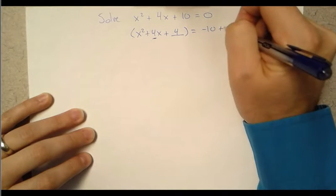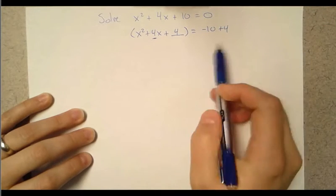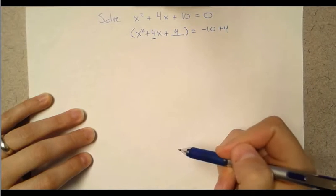Now make sure you add it to both sides. Basic principle in algebra right? We've got to do the same thing to both sides. Keep our equation balanced.